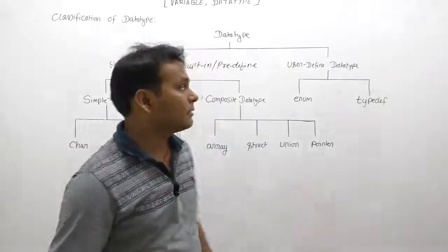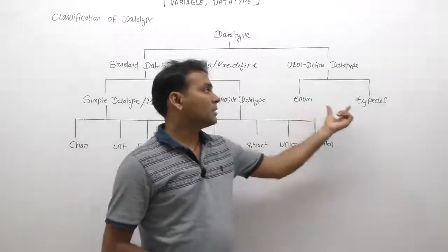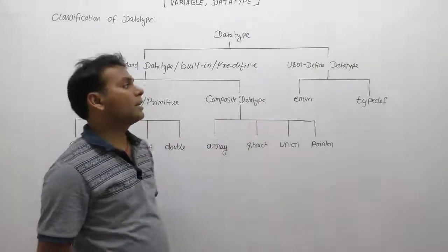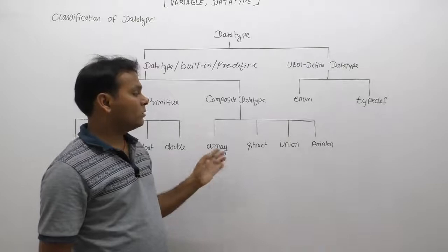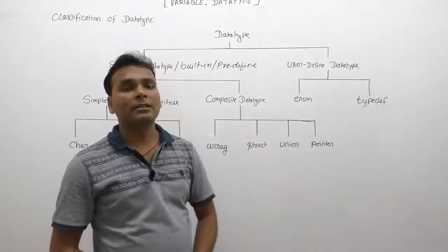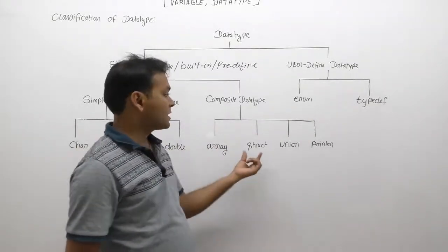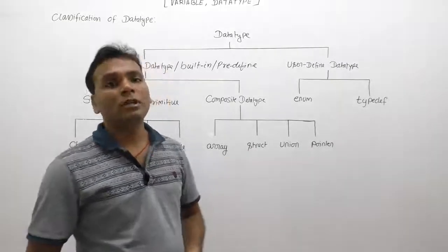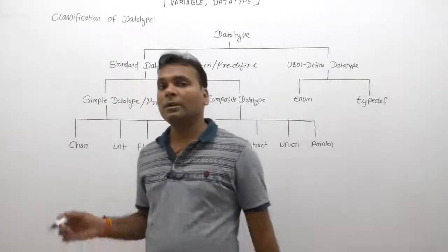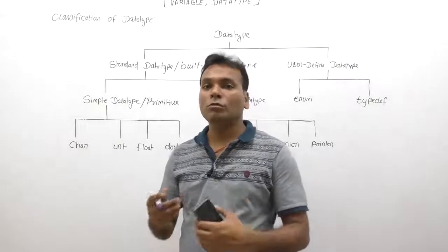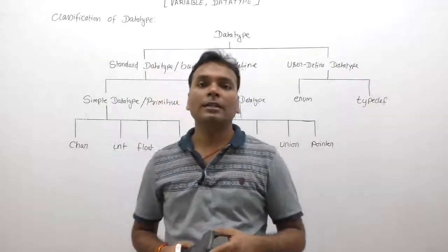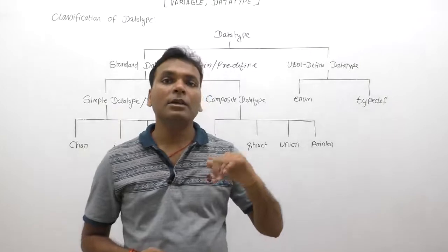User-defined data types are again divided into two categories: enumerations or typedef. Composite data types are sometimes also considered user-defined. However, since composite types are created based on existing types, they are not completely considered user-defined. Structure and union are also sometimes referred to as user-defined data types. Simple data types are again divided into two categories: simple and composite. Composite data types are created by using existing simple data types.